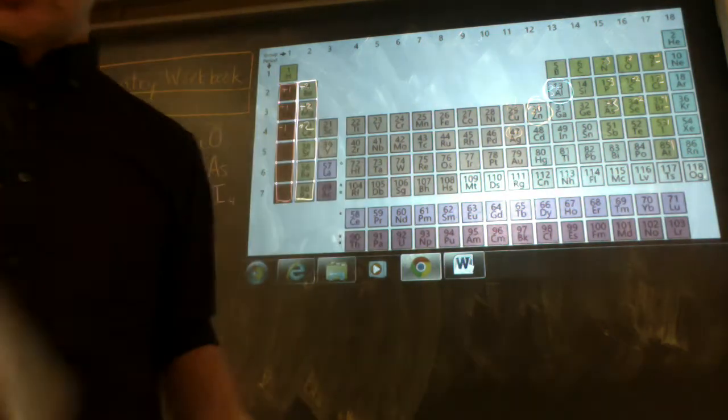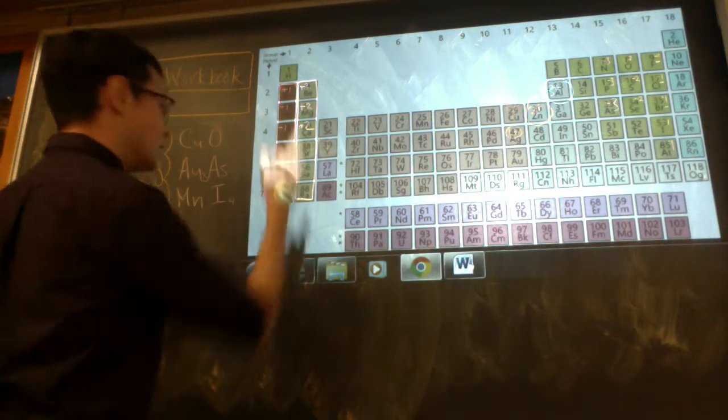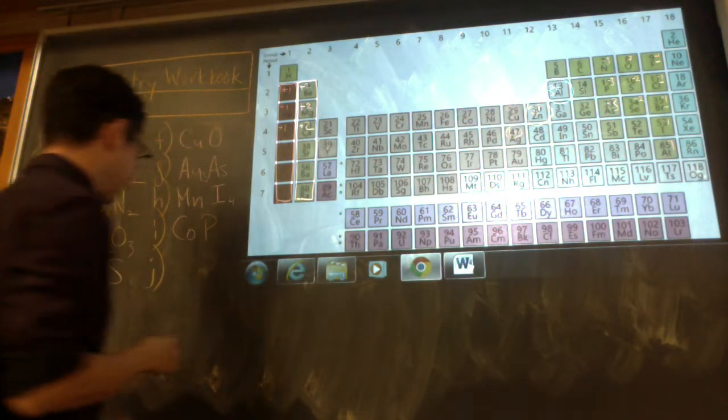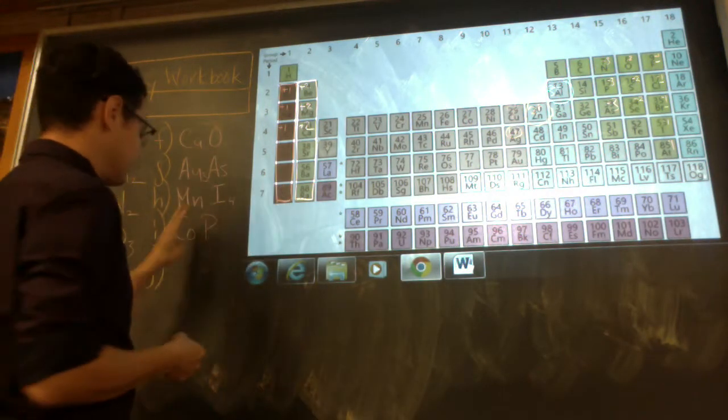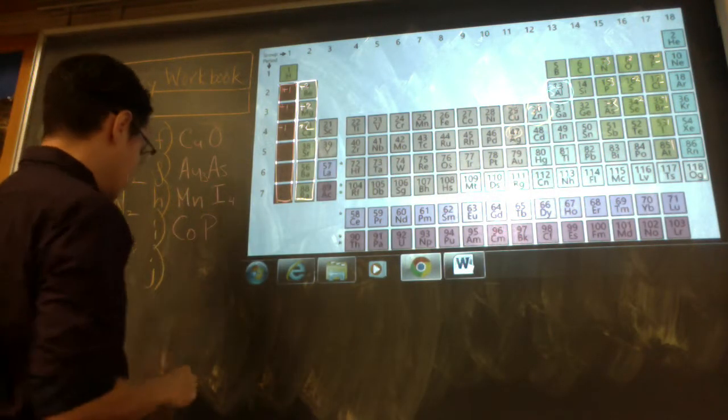Cobalt(III) phosphide. Cobalt and phosphorus. Phosphide. CoP. Cobalt is 3+. Phosphorus is also 3-. So 3 and 3 is going to give us 1 and 1: CoP.